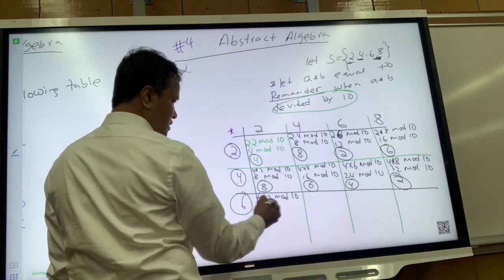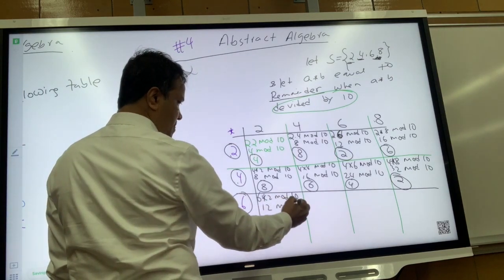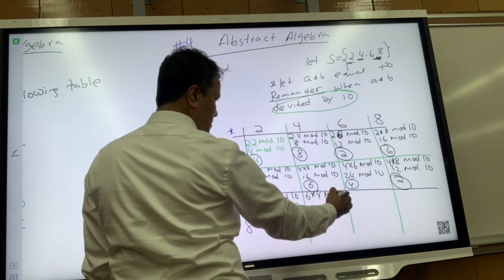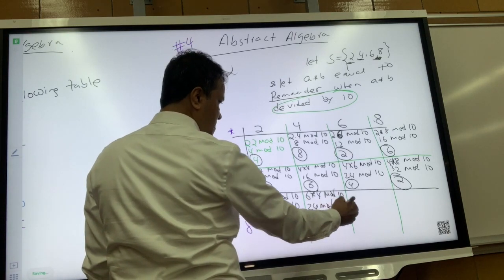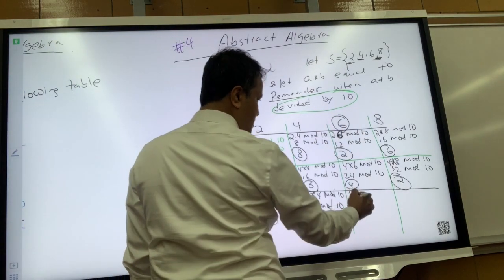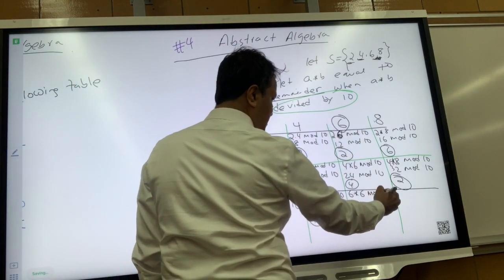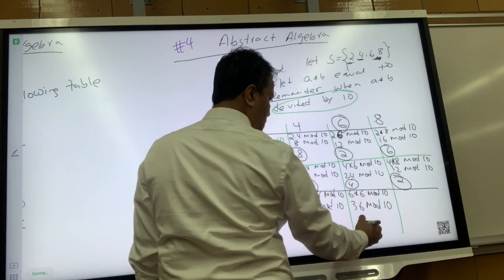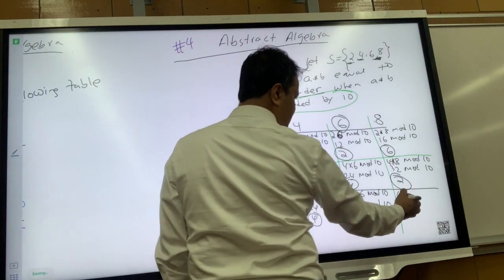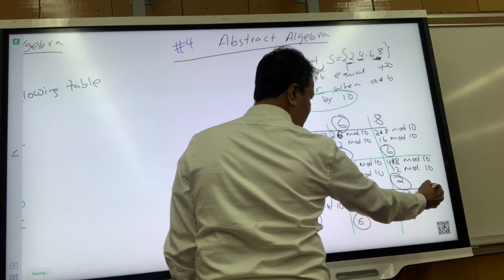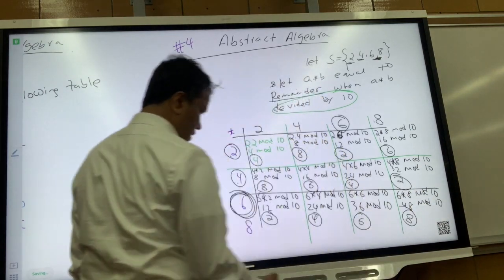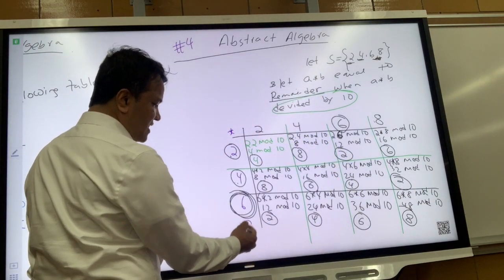Now let's do the 6 row. 6 times 2 mod 10: 12 mod 10 is 2, and 2 is in the set. 6 times 4 mod 10: 24 mod 10 is 4, and 4 is in the set. 6 times 6 mod 10: 36 mod 10 is 6, and 6 is in the set. 6 times 8 mod 10: 48 mod 10 is 8, and 8 is in the set.